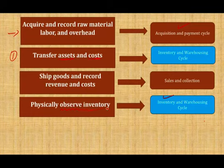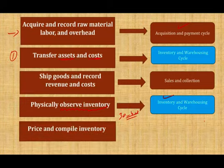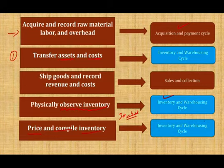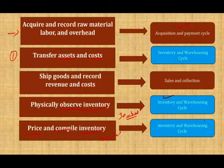We're going to spend a lot of time on physical observation — approximately 30 to 40 minutes on how we observe inventory. The last part is to price and compile inventory. Here we determine the inventory valuation method — FIFO, LIFO, or weighted average — and verify whether the client is using the same method as in the prior year. We'll also spend 30 to 40 minutes on this subject, looking at internal controls, how to perform this properly, and how to perform inventory compilation tests.